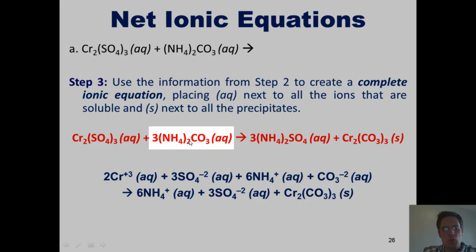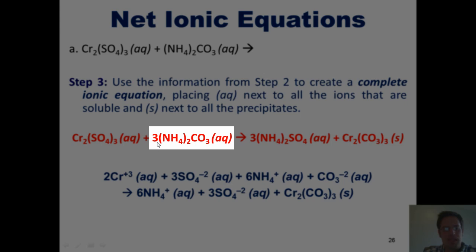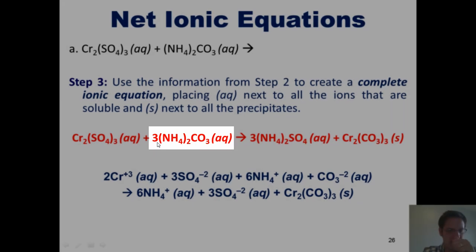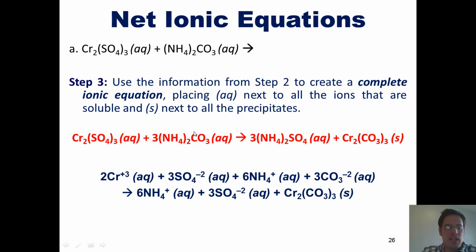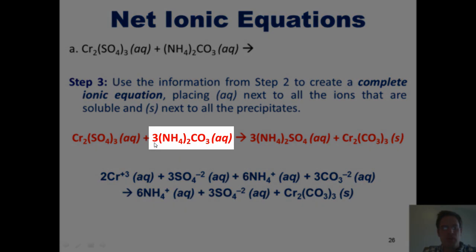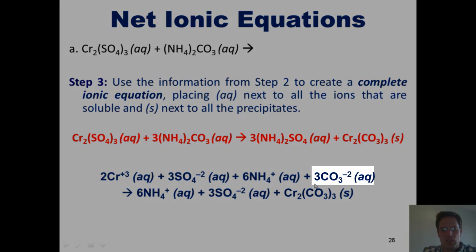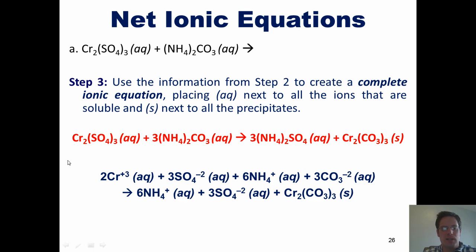How many ammoniums do we have? We have the subscript 2 multiplied by the coefficient 3, so there are indeed 6 ammoniums. Separately, the carbonate detaches as a CO₃²⁻ ion, and the coefficient 3 becomes a coefficient next to the carbonate. We will do the same process for the product side of the equation.